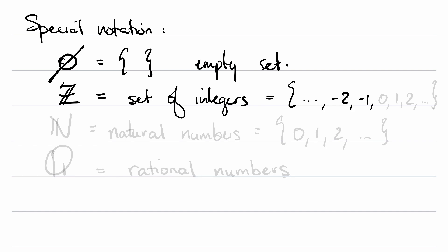N is the natural numbers, which are the non-negative whole numbers, and then there is this fancy Q, which is going to be the rational numbers. More on this later.